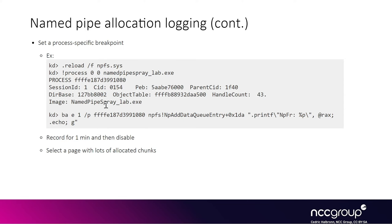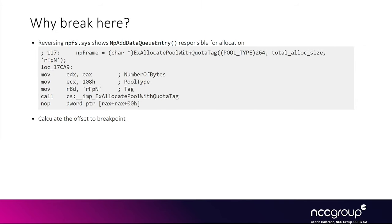This slide demonstrates how to set a breakpoint for a single process. We get the KPROCESS structure address using the process command, then set the breakpoint specifying the KPROCESS address using the /p flag. Once done, we disable the breakpoint because otherwise it's too noisy. The breakpoint is inside the NpAddDataQueueEntry function, where the call to ExAllocatePoolWithTag uses the npfr tag, as expected. We set a breakpoint on the instruction just after the call, where the RAX register will hold the allocated chunk.